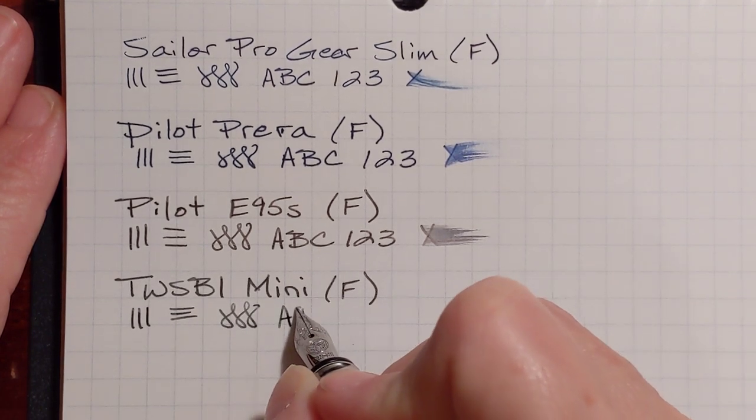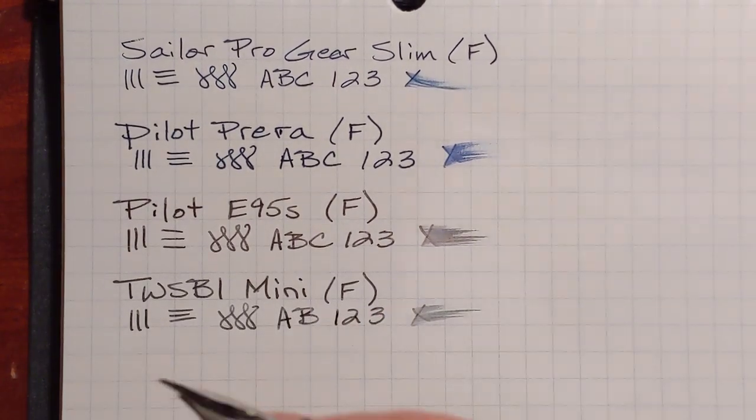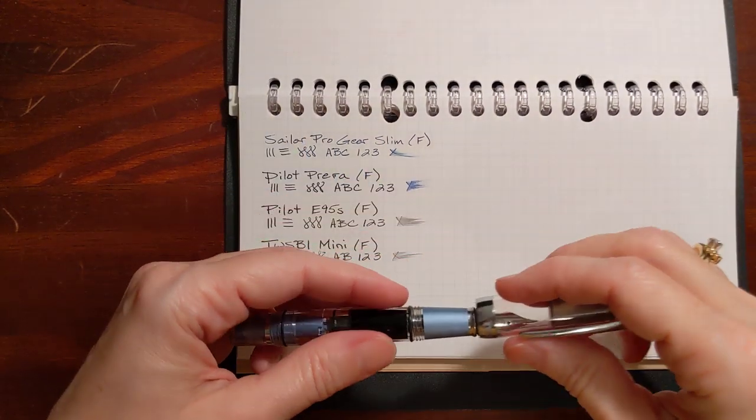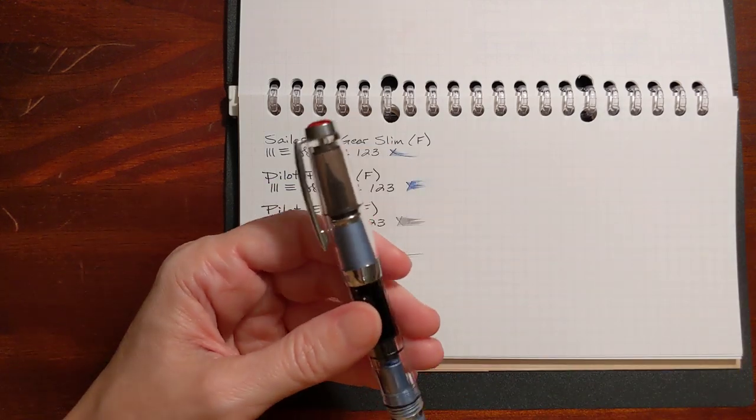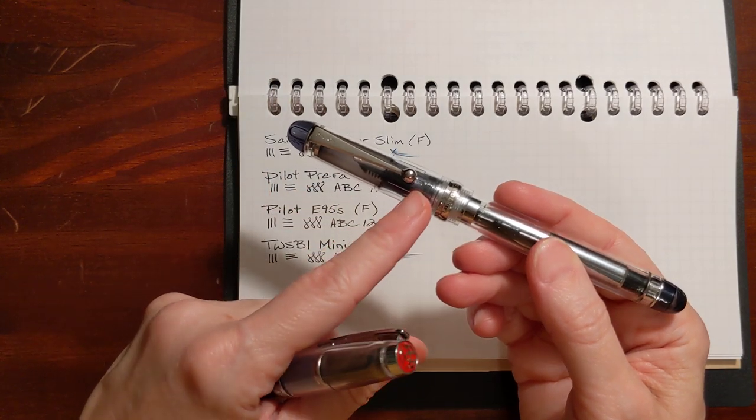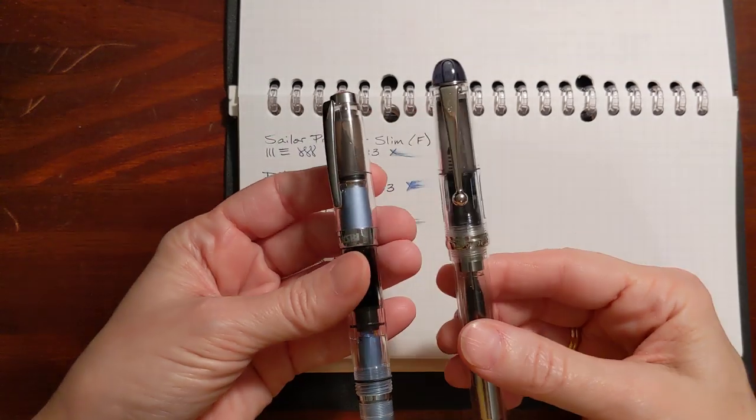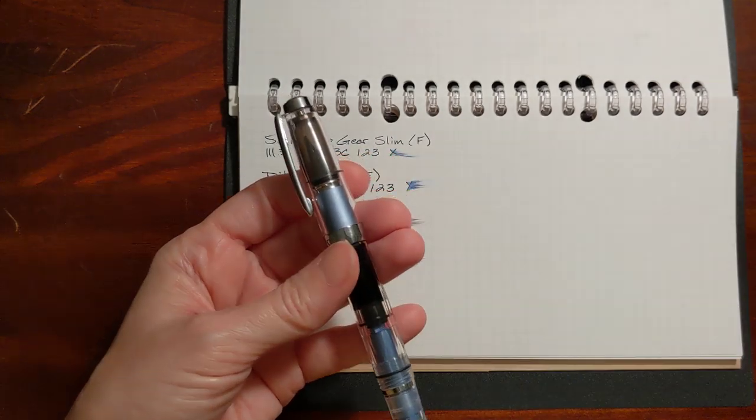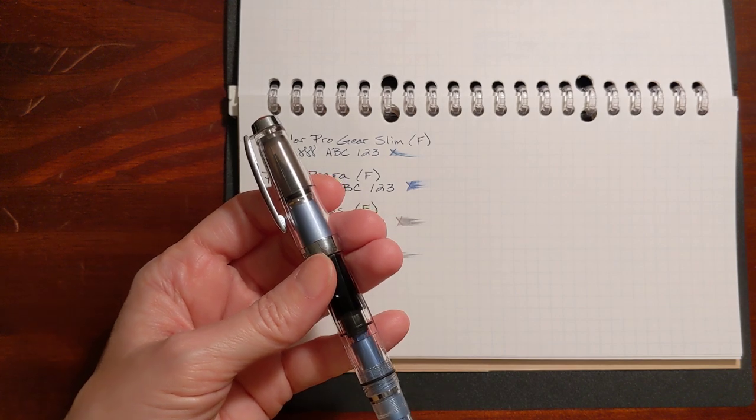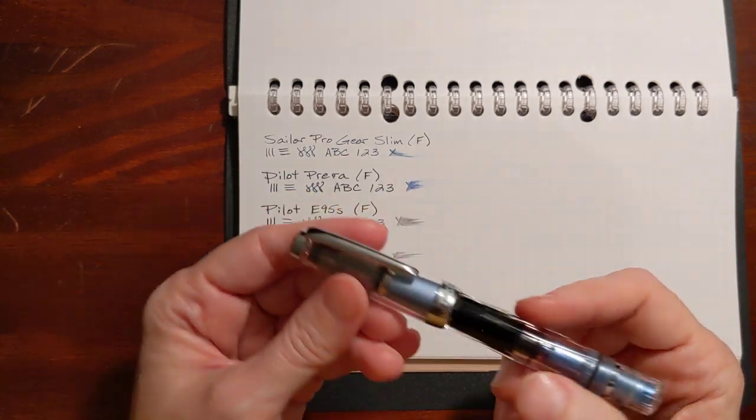But I have found recently that I prefer, instead of reaching for this pen, I tend to reach for my Custom 74. It writes just slightly wetter, and it puts down a finer line. And these are still two of my favorite pens. I just tend to reach for the Custom 74, which is another pen that works very well with Diamine Earl Grey.